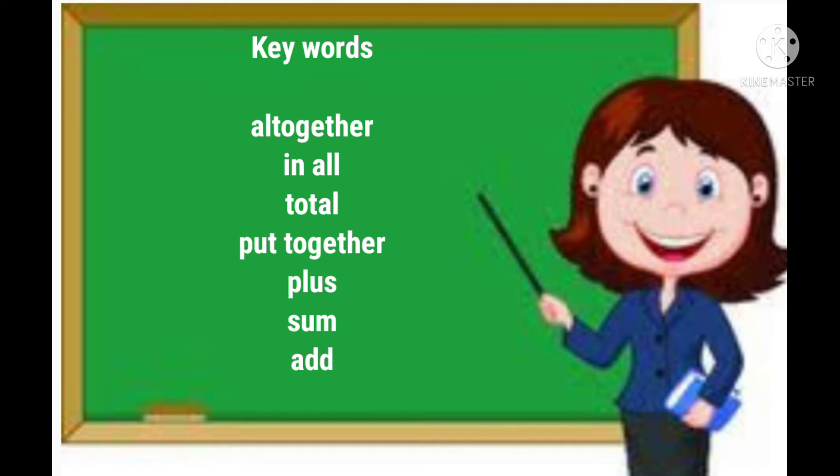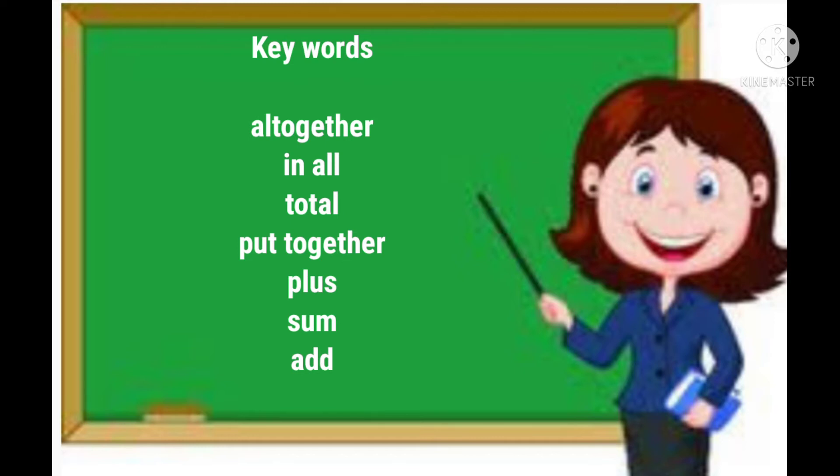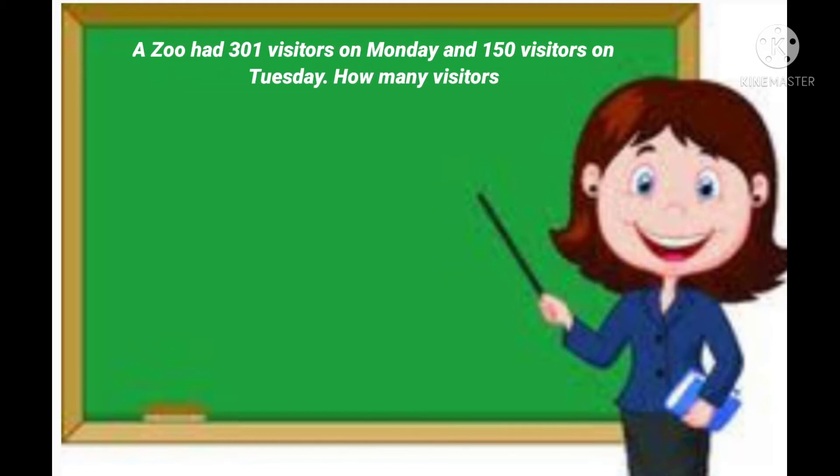Children, let's begin. A zoo had 301 visitors on Monday and 150 visitors on Tuesday. How many visitors were there in all on these two days?